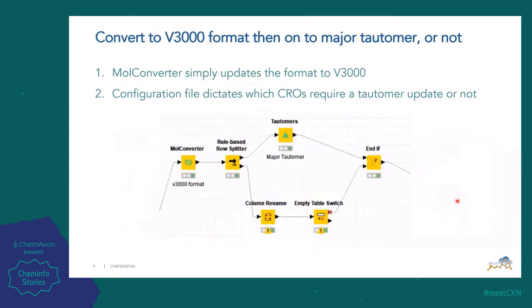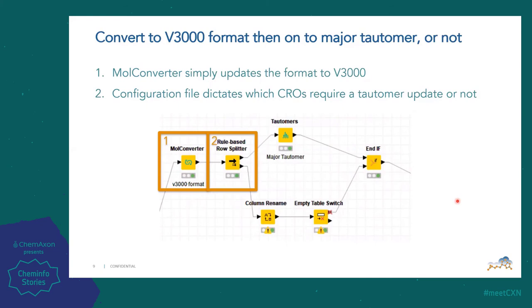Looking at the convert to V3000 format and the major tautomer step: sometimes with a vendor we may want to ensure we are using the major tautomer, whereas when working with CROs, they often draw exactly what we want to register, so we want to bypass that. The first thing we do is convert into V3000 format. Then there is a rule splitter that dictates whether the CRO requires a tautomer update. If it requires a tautomer update, it passes through the top tautomer node to create the major tautomer. If not, it will bypass that node and go through the bottom channel and then rejoin.